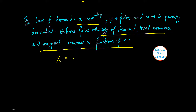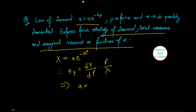Therefore x equals A·e to the power minus BP. Price elasticity equals dx/dp multiplied by p/x, which gives A·e^(−BP) times (−B) times p divided by A·e^(−BP), which equals minus BP.